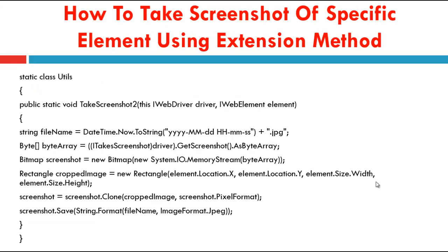Now let us see how to take the screenshot of a specific element using an extension method. We have to create one class — here I have created a class called Utils. In that, I have created one static method called TakeScreenshot, which is an extension method. For that, we need to pass the IWebDriver driver and a web element. I have also created one string variable that captures the time, date, and file extension as .jpg. Then I create a byte array where I typecast the ITakesScreenshot interface and store that using the GetScreenshot method and the AsByteArray property.